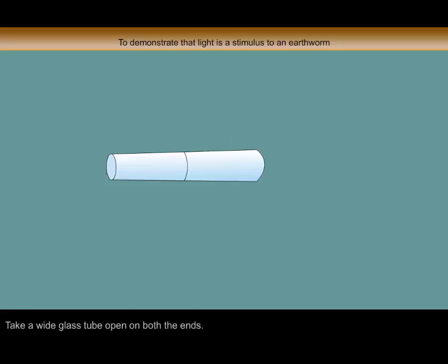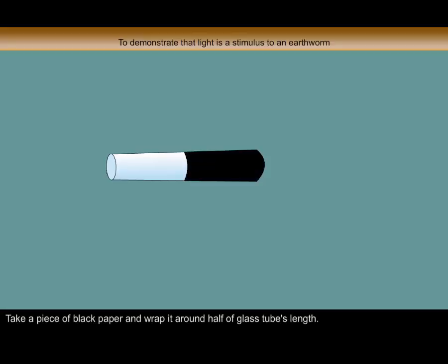Procedure: Take a wide glass tube open on both the ends. Take a piece of black paper and wrap it around half of the glass tube's length.